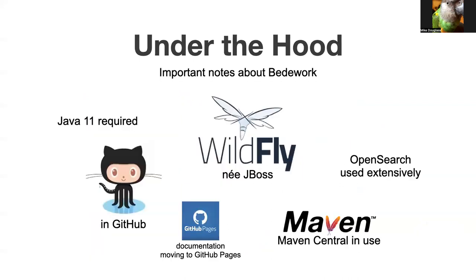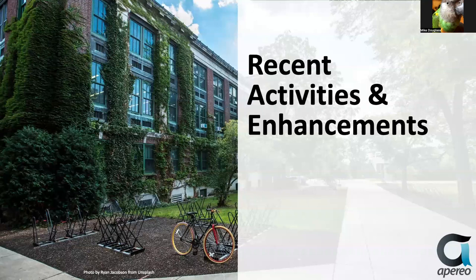Under the hood, it requires Java 11. It runs on WildFly, almost the latest version at the moment. We use OpenSearch for searching — it was Elasticsearch, but due to licensing issues we moved to OpenSearch. You'll find on GitHub, documentation has moved to GitHub Pages, and we use Maven to do the builds.